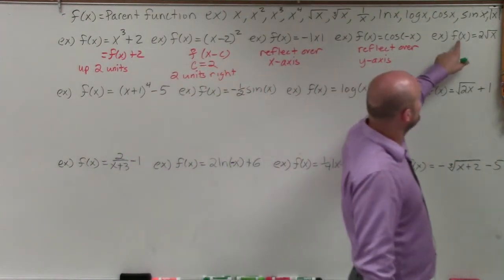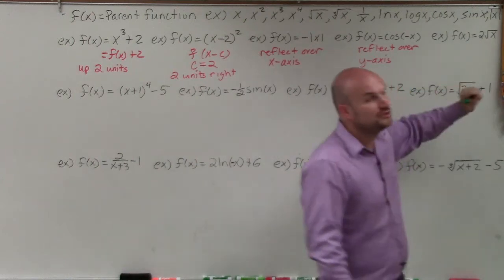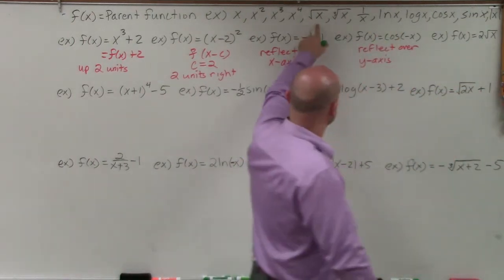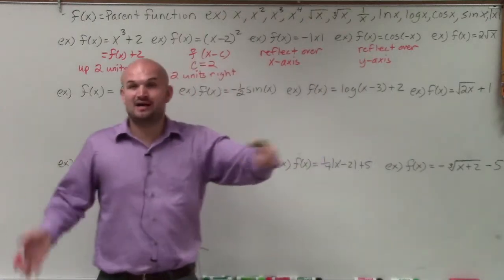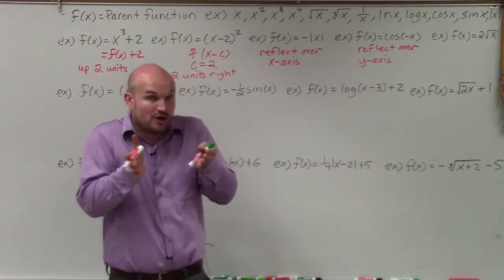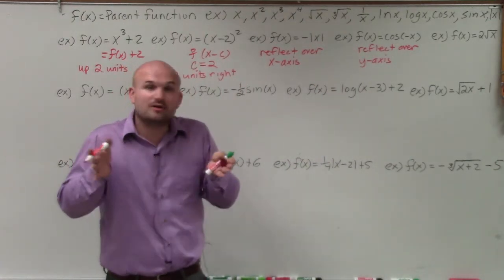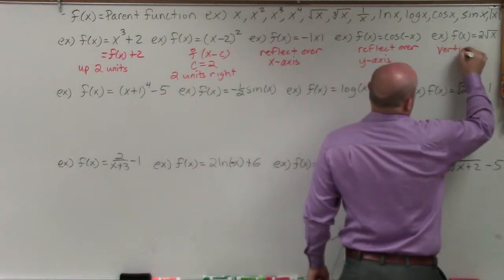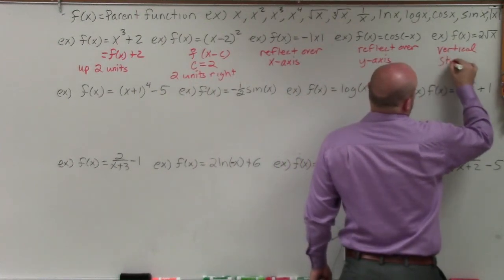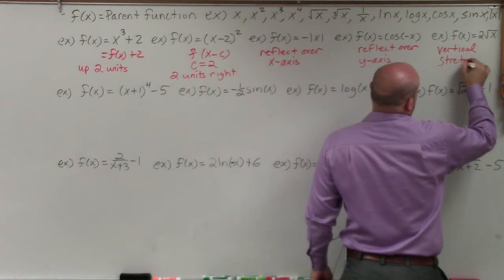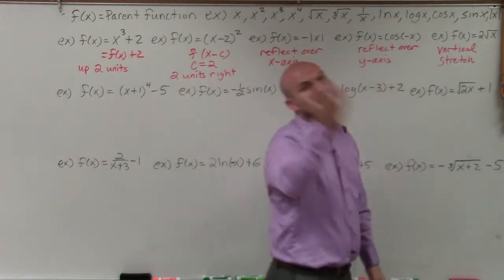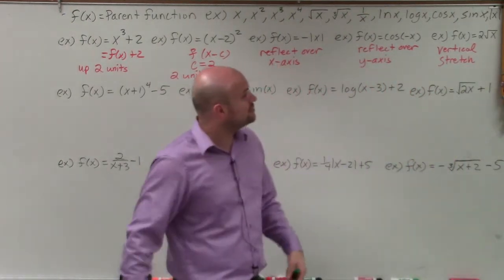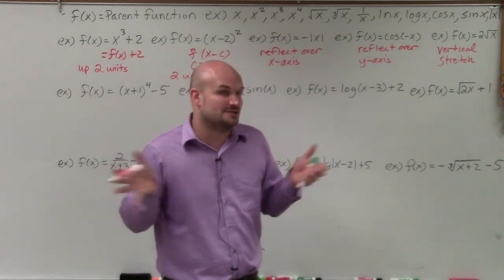In this example, I have f of x equal to 2 times the square root of x. It's being multiplied by a multiplier, and the absolute value of that number, 2, is greater than 1. So I'm going to call this a vertical stretch — or you can think of that as a horizontal compression.